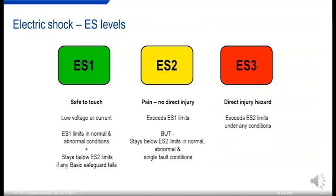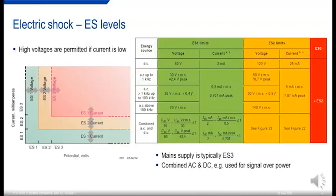Next, we'll look at classification of energy sources. For electric shock, we have ES1, ES2, and ES3 — ES standing for electric source. ES1 is safe to touch, with low voltage or current, staying below ES1 limits in normal and abnormal conditions and below ES2 limits if any basic safeguard fails. ES2 might cause pain but no direct injury — exceeding ES1 limits but staying below ES2 limits in all conditions. ES3 is a direct injury hazard exceeding ES2 limits under any conditions. High voltages are permitted if the current is low enough, with different values for DC and AC, plus different values for higher frequencies and combined AC/DC circuits such as Power over Ethernet.